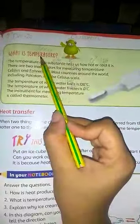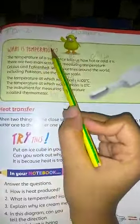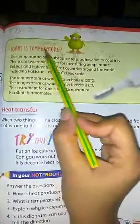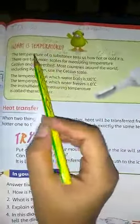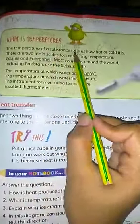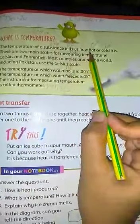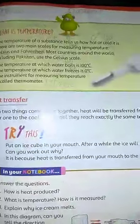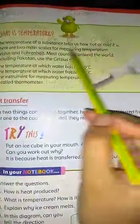Today we will study about temperature. Temperature کا اردو meaning ہوتا ہے درجہ حرارت. Today we will learn what is temperature. The temperature, درجہ حرارت of a substance مادے کا, tells us how hot, کتنا گرم, or cold, ٹھنڈا it is. کسی بھی مادے کا temperature ہمیں یہ بتاتا ہے کہ مادہ کتنا گرم یا کتنا ٹھنڈا ہے.